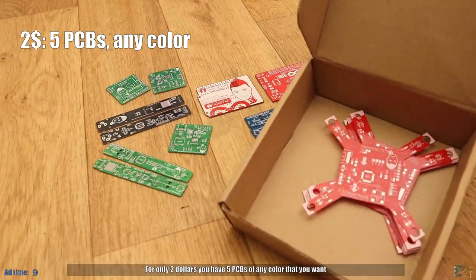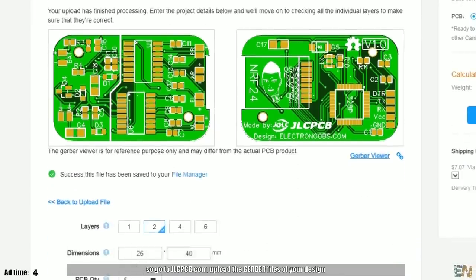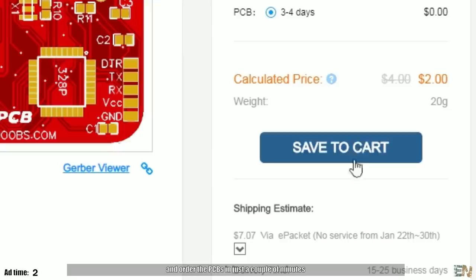For only $2, you have 5 PCBs of any color that you want, so go to jlcpcb.com, upload the gerber files of your design and order the PCBs in just a couple of minutes.